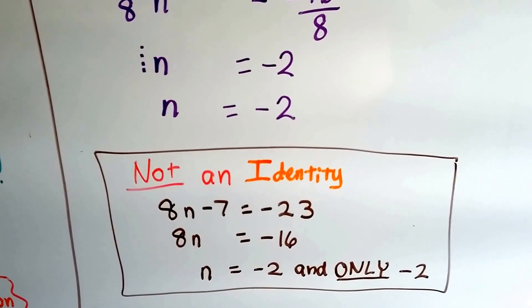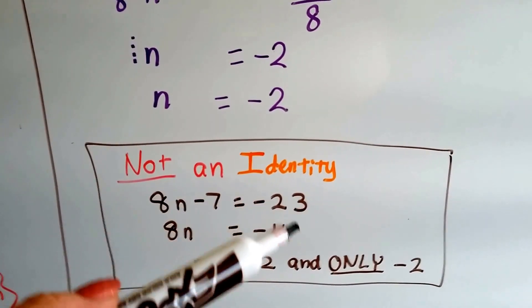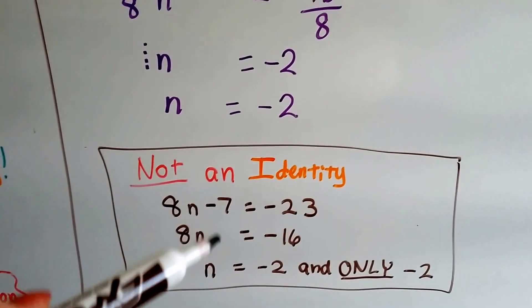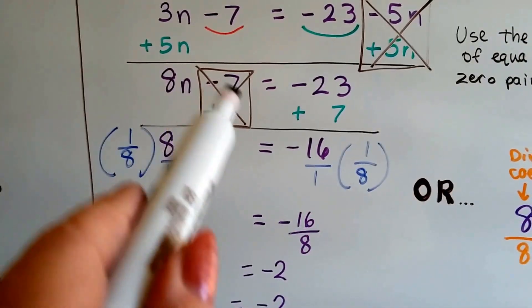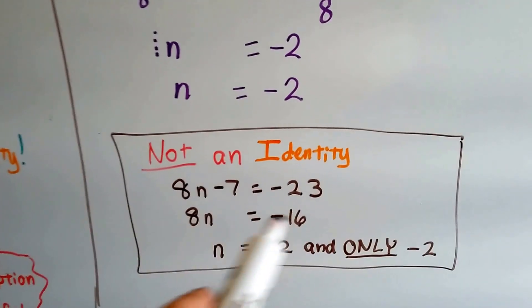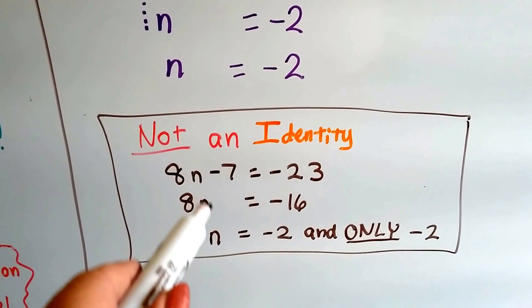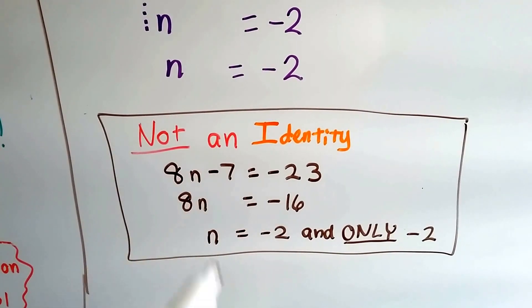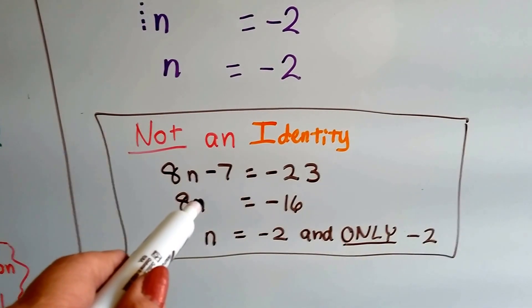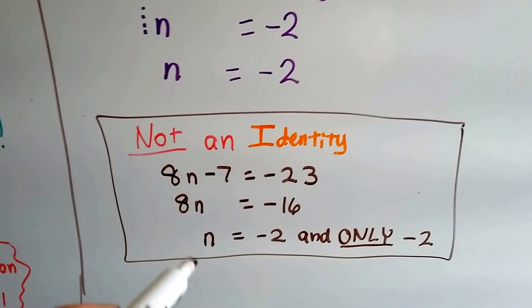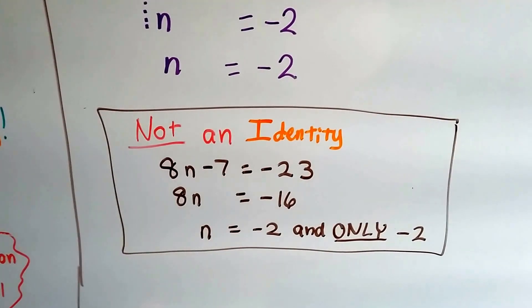Now this is not an identity. We had 8n minus 7 equals negative 23. And when we used our addition property of equality to get rid of this, we ended up with 8n equals negative 16. And can any number be put here for n and make this a true statement? Can we put a 3 here? Well, 8 times 3 is 24. That doesn't equal negative 16. Can we put a 1 there? No. 8 times 1 is 8. It doesn't equal negative 16. What about a 5? 8 times 5 is 40.